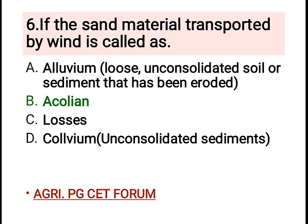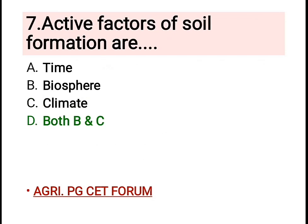Sixth question: if sand material is transported by wind, it is called — and the right answer is B, aeolian. Other options are: alluvium, which means loose unconsolidated soil or sediment that has been eroded; and D, which means unconsolidated sediments.